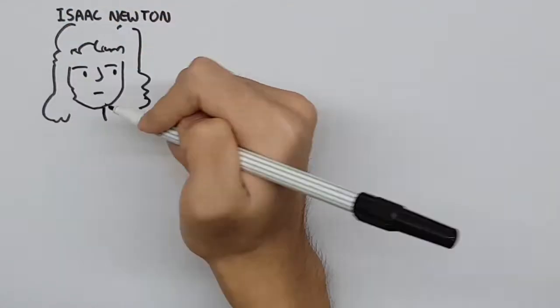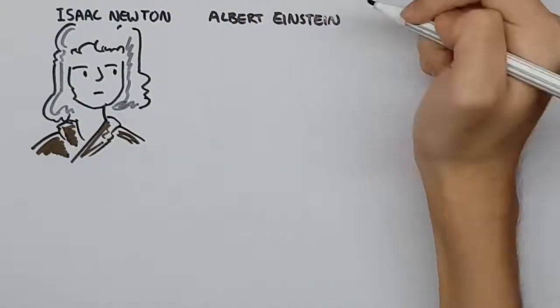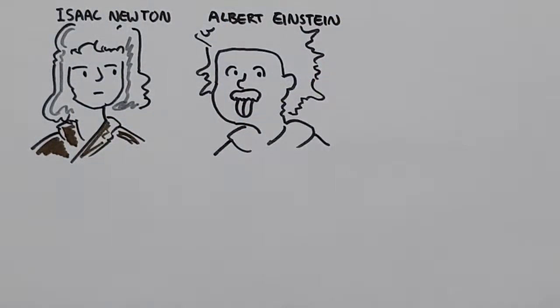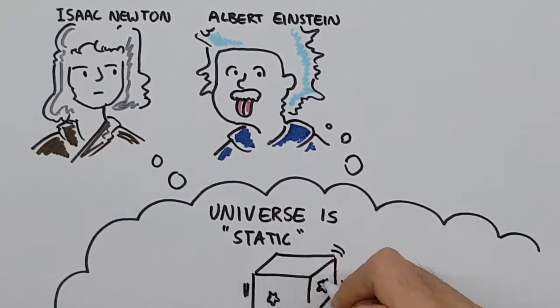At first, everyone, including well-known physicists Isaac Newton and Albert Einstein, believed that the universe was static, for no particular reason.